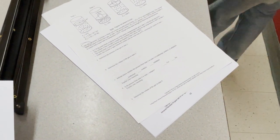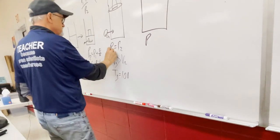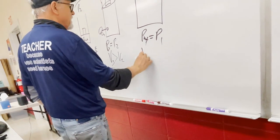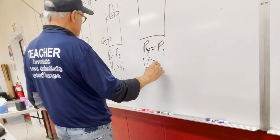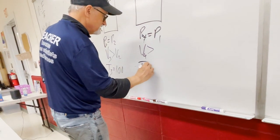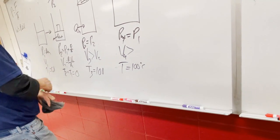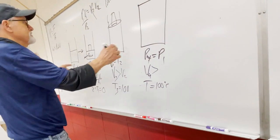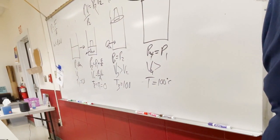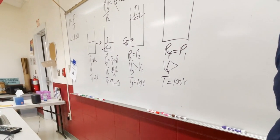Part D: Is the process from state four to state one isobaric? State four has atmospheric pressure (piston free to move) and temperature of 100°C. State one has atmospheric pressure and 0°C. Since the piston is free, pressure outside equals pressure inside — both states are at atmospheric — so yes, the process four to one is isobaric.